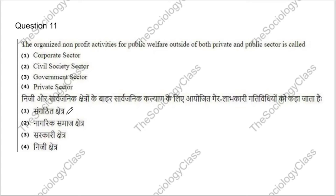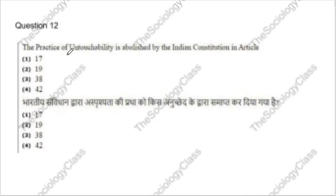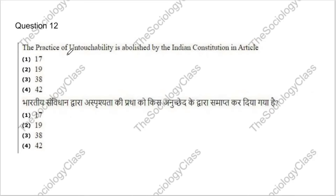Question 11: The organized non-profit activities for public welfare outside of both private and public sector is called what? Options: corporate sector, civil society sector, government sector, or private sector. The correct answer is civil society sector.